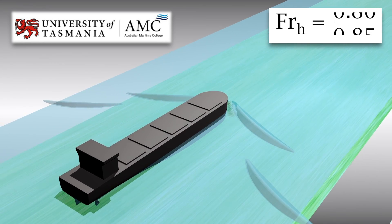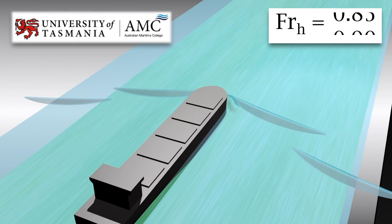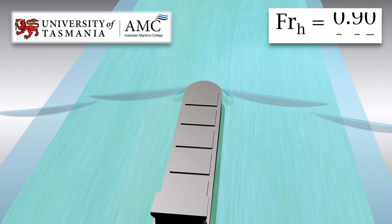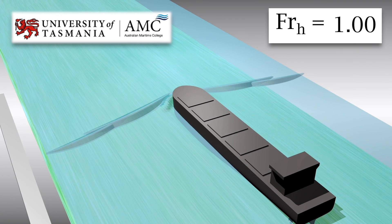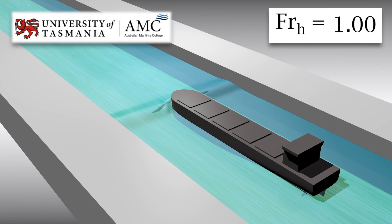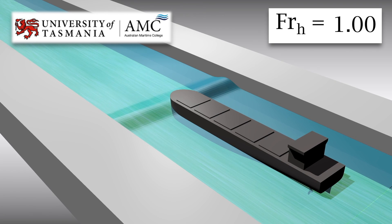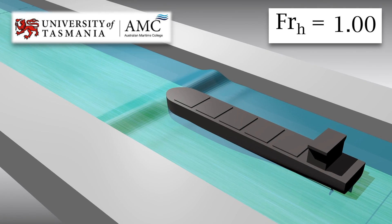As a vessel approaches a critical Froude depth of one, it produces a wave of translation due to the maximum wave speed. If this energy is contained, such as in a channel, it will continuously disperse ahead of the vessel in the form of soliton waves.